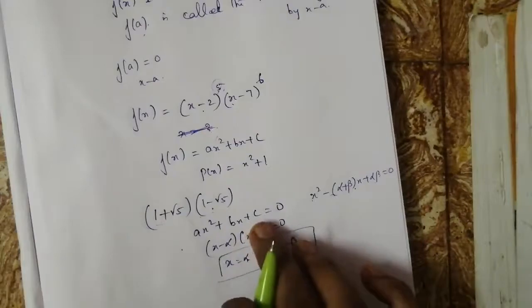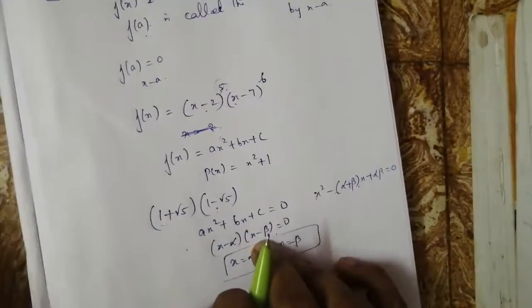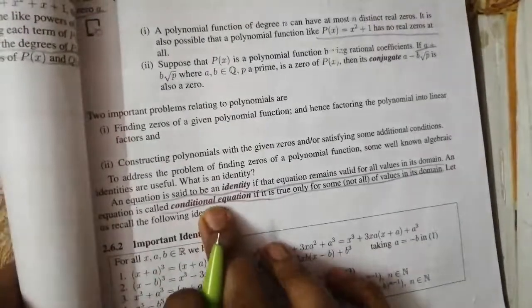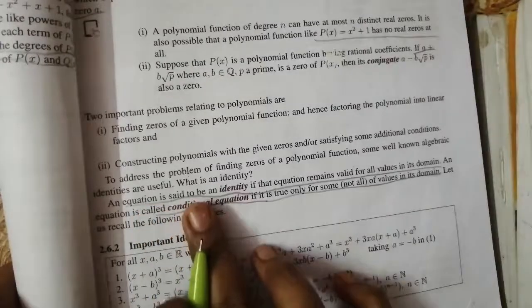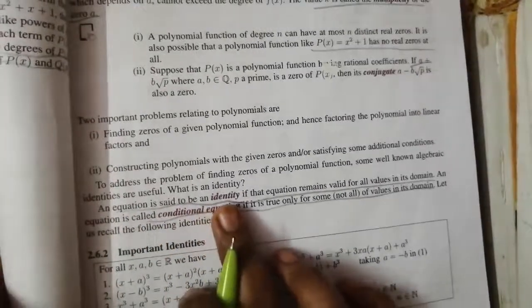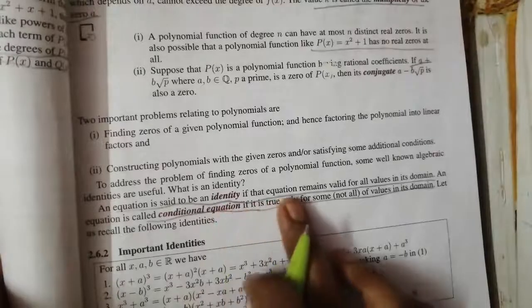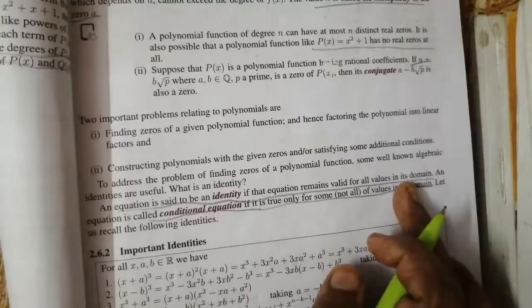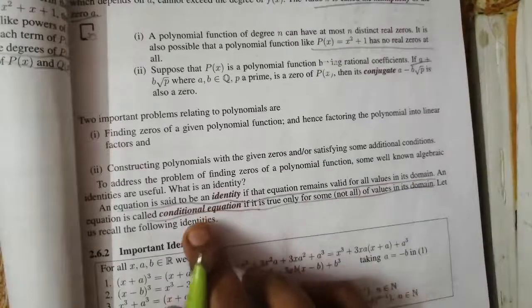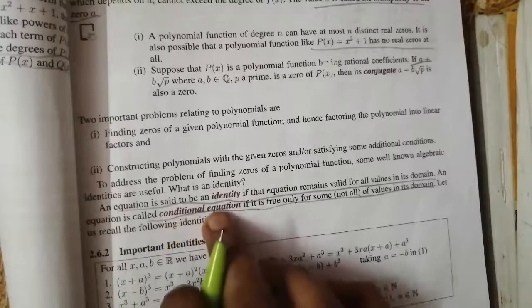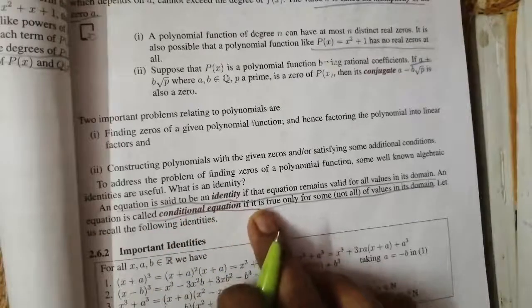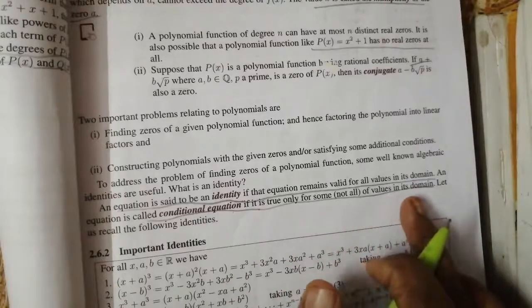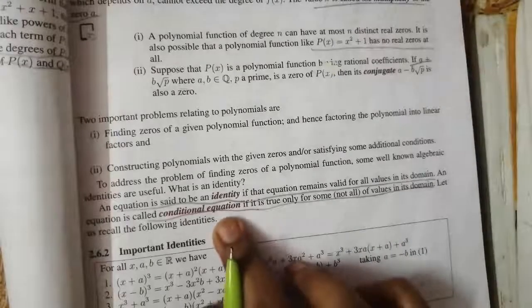An identity is an equation that remains valid for all values in its domain. A conditional equation is true only for some values in its domain. For example, (a + b)² = a² + 2ab + b² is an identity.